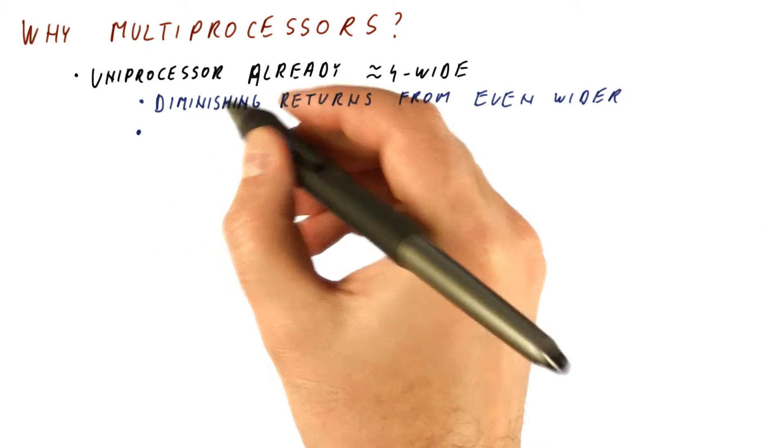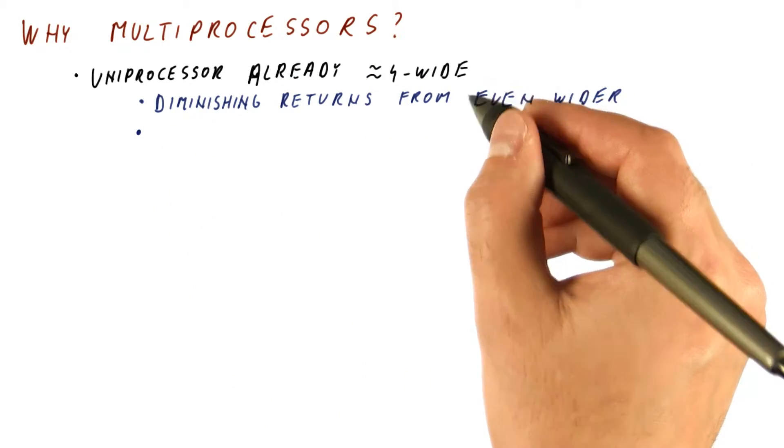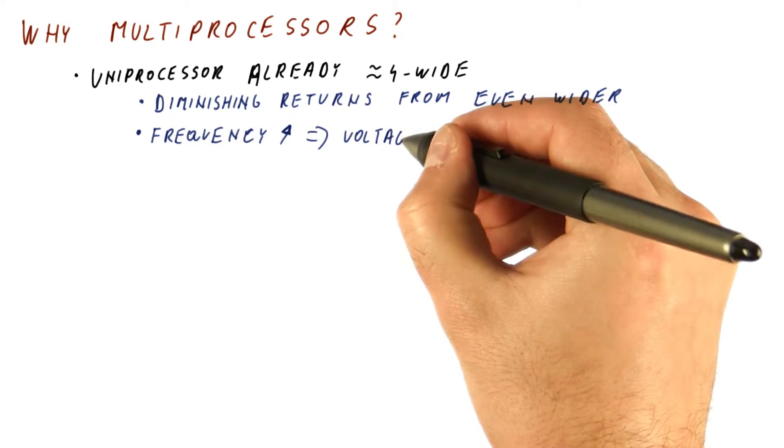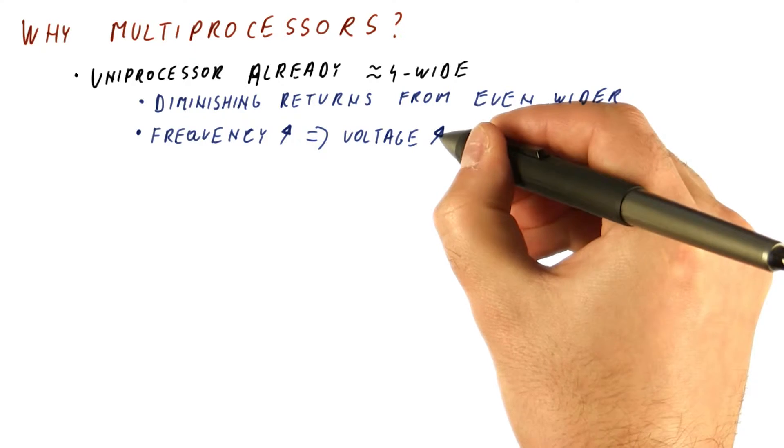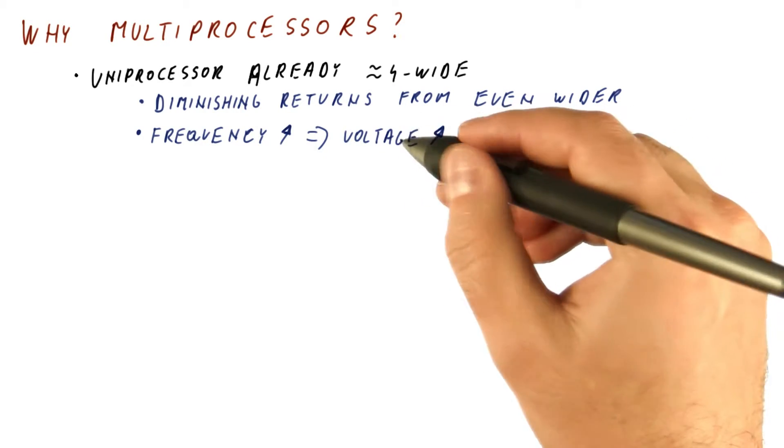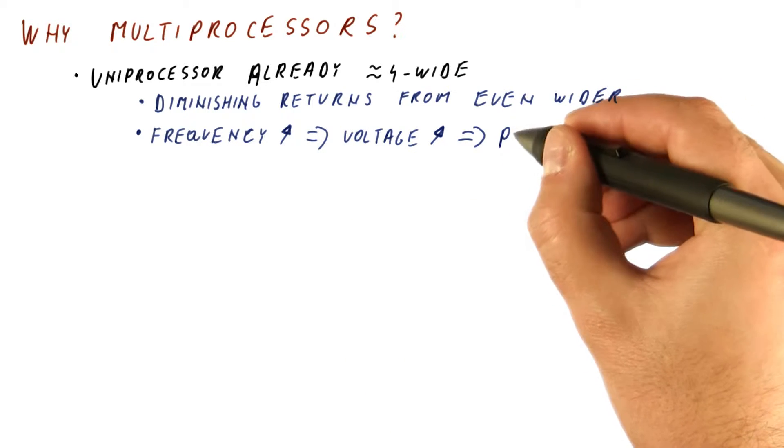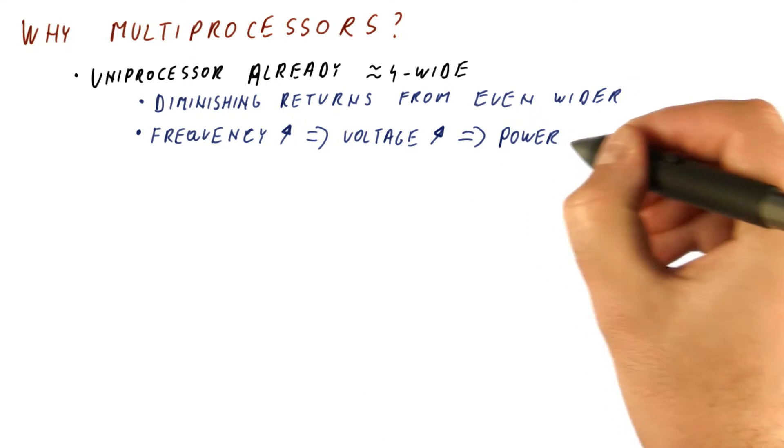Another problem with uniprocessors, if we make them even fancier, is to make them faster, we have to jack up the frequency. To do that, we have to raise the voltage from what it would be if it used a lower frequency. And when we do both of these, the power consumption grows up cubically.